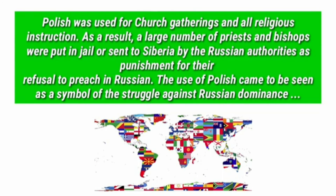As a result, a large number of priests and bishops were put in jail or sent to Siberia by the Russian authorities as punishment for their refusal to preach in Russian. The use of Polish came to be seen as a symbol of the struggle against Russian dominance. In Poland, priests, bishops, and high-ranking clergy continued to use Polish in church gatherings and instructions, completely disobeying the Russian language directive. Thus, the Polish language became a national symbol against Russian dominance.